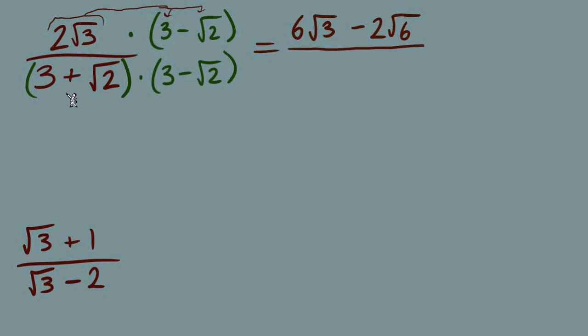Denominator: it's FOIL, but since we have conjugates, we're going to skip outer and inner. We'll just do our first: 3 times 3 equals 9. Our last, we know it will be negative, and it's radical 2 with radical 2, which is 2.